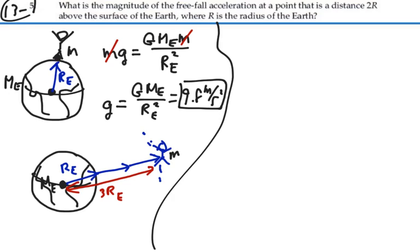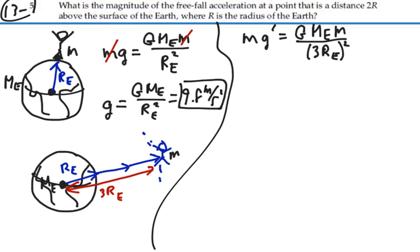The mass of the Earth is treated as being at the center of the Earth, and you're out at 3r. If we calculate the gravity at that point, we say m times g-prime equals the gravitational constant times the mass of the Earth times your mass, over the distance between you squared — which in this case is three times the radius of the Earth, squared.